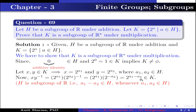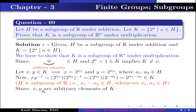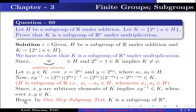This is because h is a subgroup of ℝ, that is, a1 − a2 belongs to h whenever a1, a2 belong to h. Since x and y are arbitrary elements of k, this implies xy⁻¹ belongs to k whenever x, y belong to k. Hence, by the one-step subgroup test, k is a subgroup of ℝ*.